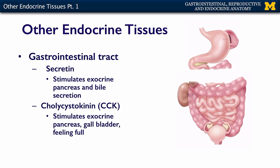Two more hormones secreted from the GI tract are secretin — which stimulates the exocrine pancreas and bile secretion from the liver — and cholecystokinin, which, notably, is also used as a neurotransmitter.